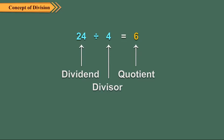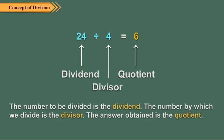In a division, we use the terms dividend, divisor and quotient. The number to be divided is the dividend. The number by which we divide is the divisor. The answer obtained is the quotient.